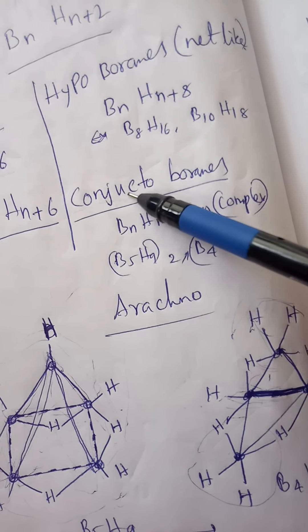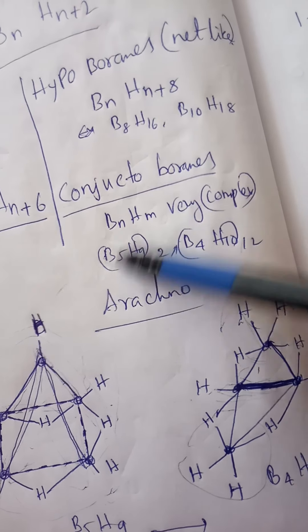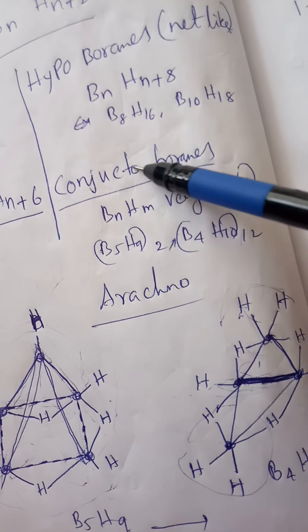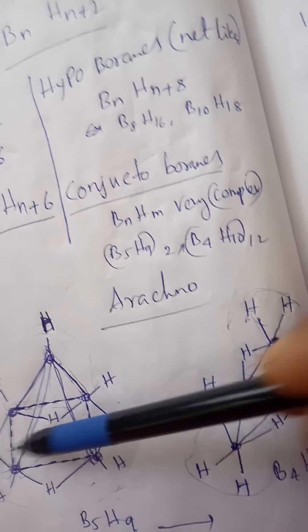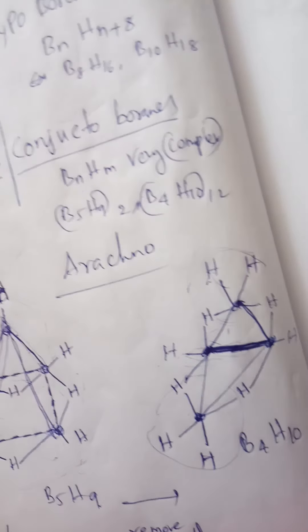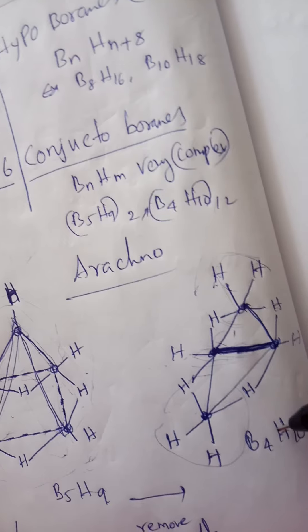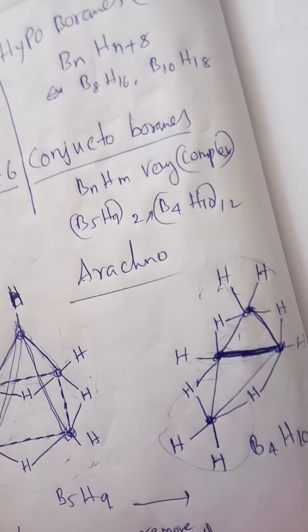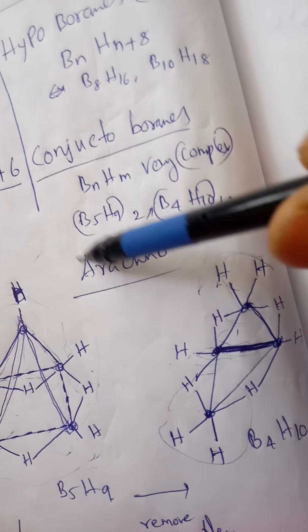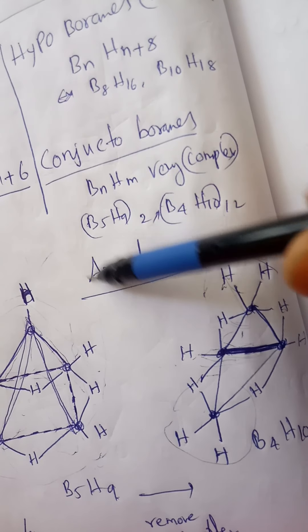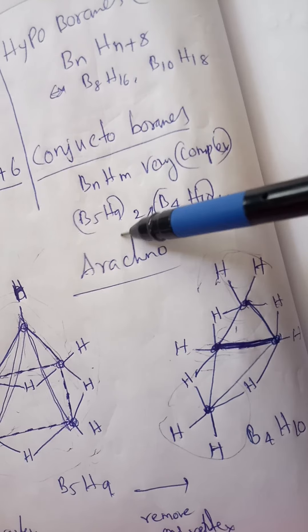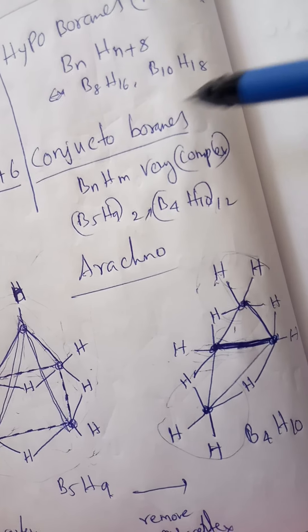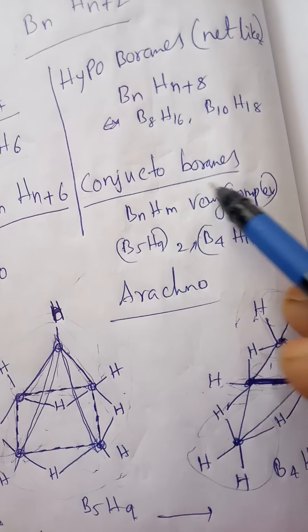Conjuncto-boranes are very complex structures. In some examples we have B5H3. In these boranes, like the previous pentaborane and tetraborane, two or more are combined. Two tetraborane units are combined and form a resultant of very complex structures.